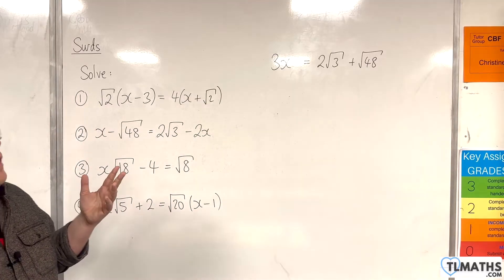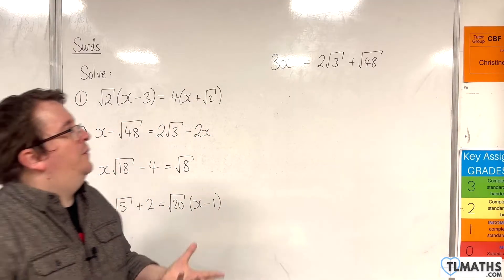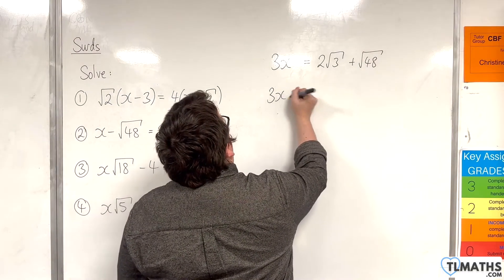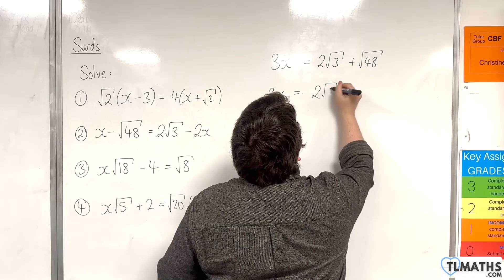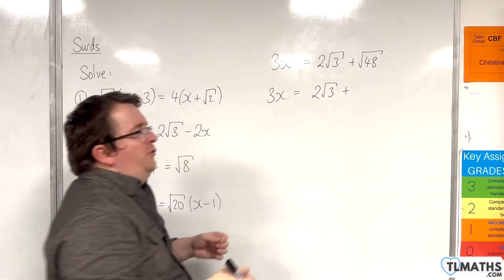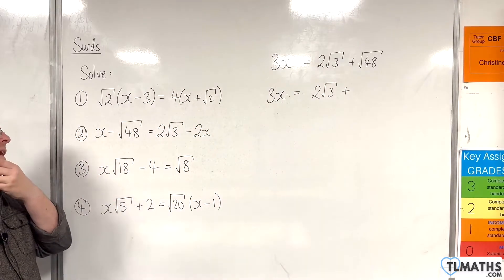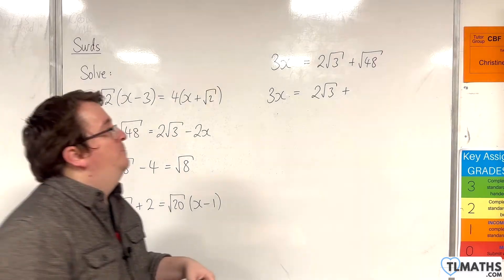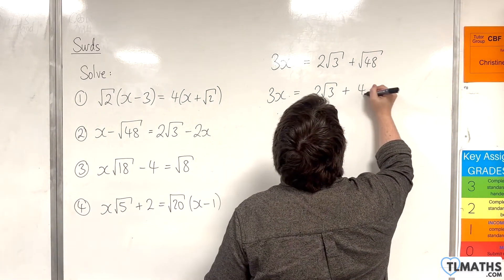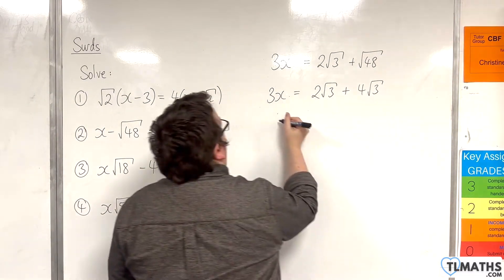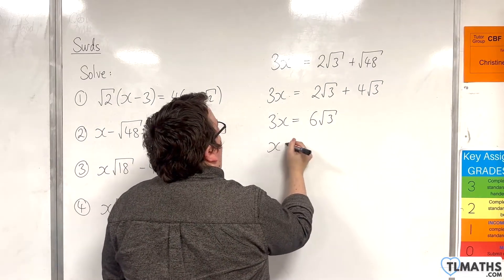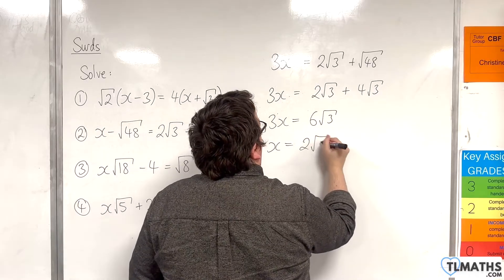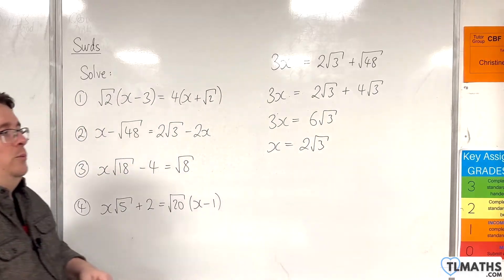I want to simplify it as far as I can. So I'll leave the left-hand side as 3x. On the right-hand side, I've got 2 root 3. Now 48 is 3 lots of 16, so that's got to be 4 root 3. So 3x is 6 root 3. So x would have to be 2 root 3. And that's the answer we're looking for.